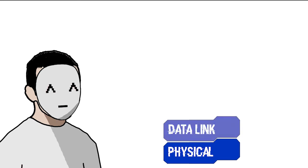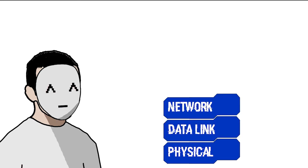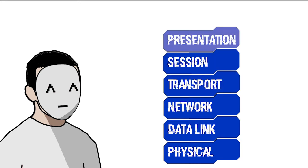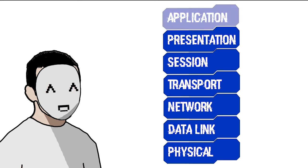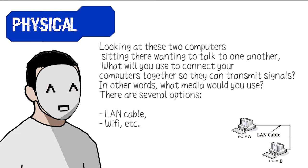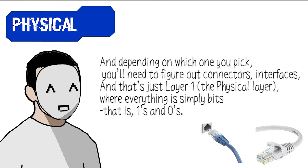The seven layers are: physical, data link, network, transport, session, presentation, and finally application. Looking at these two computers wanting to talk to one another, what would you use to connect them so they can transmit signals? In other words, what media would you use? There are several options — LAN cable, Wi-Fi, and more — and depending on which one you pick, you will need to figure out connectors and interfaces.